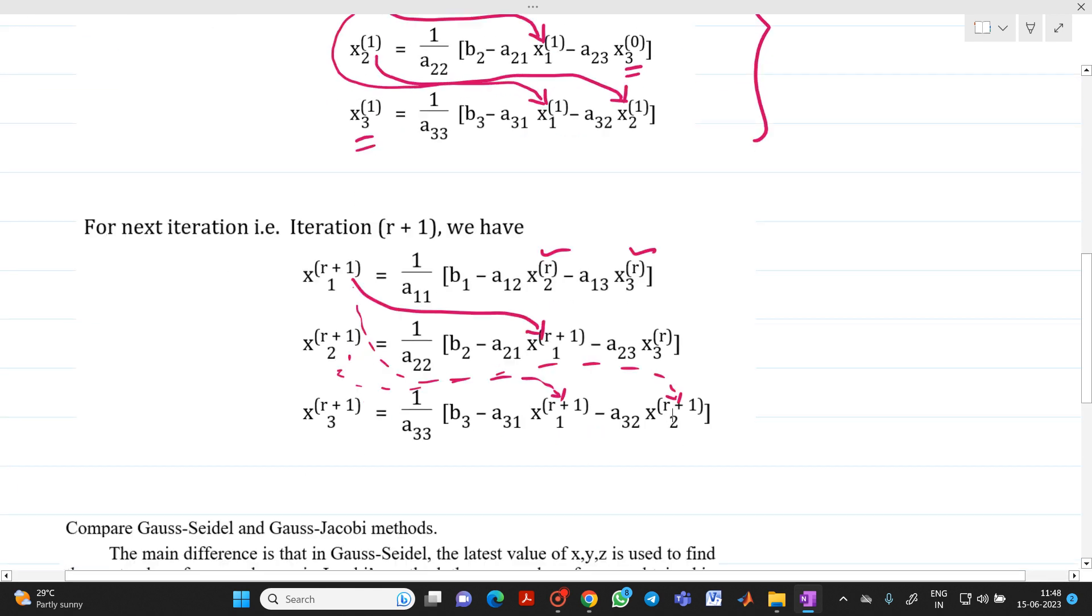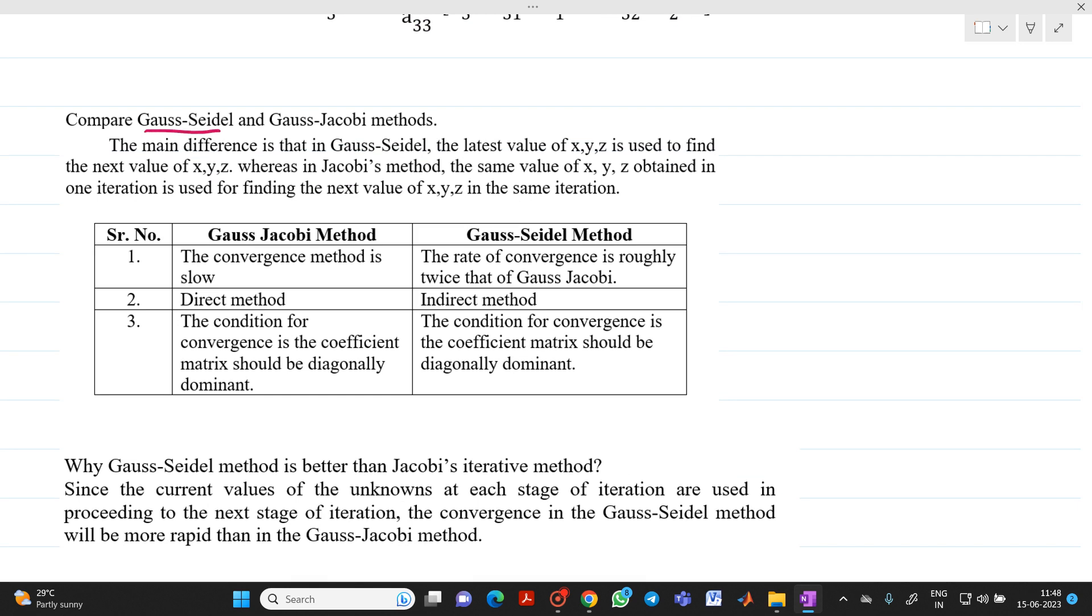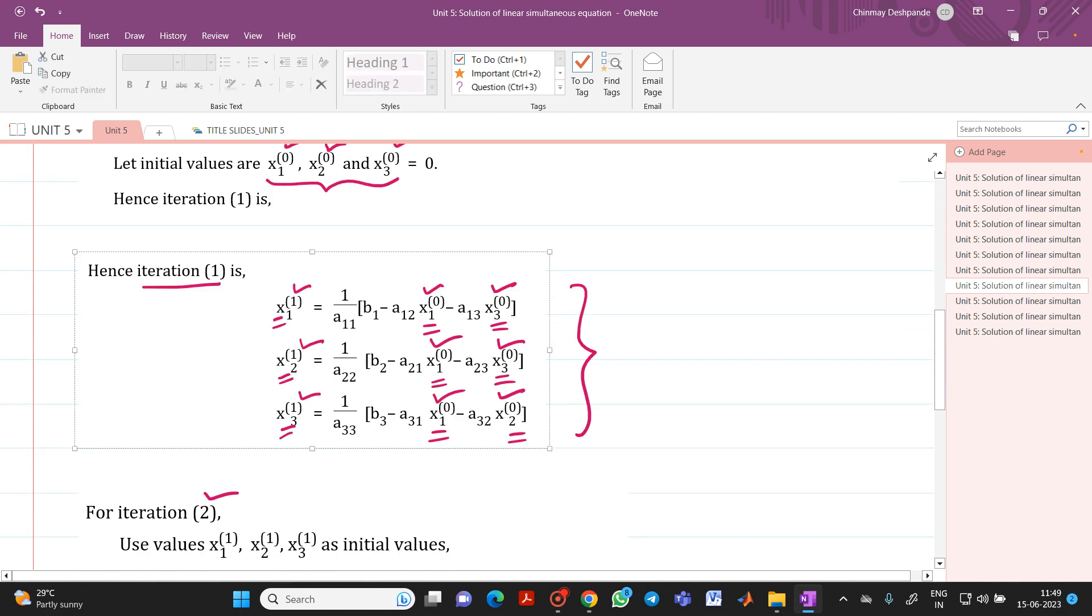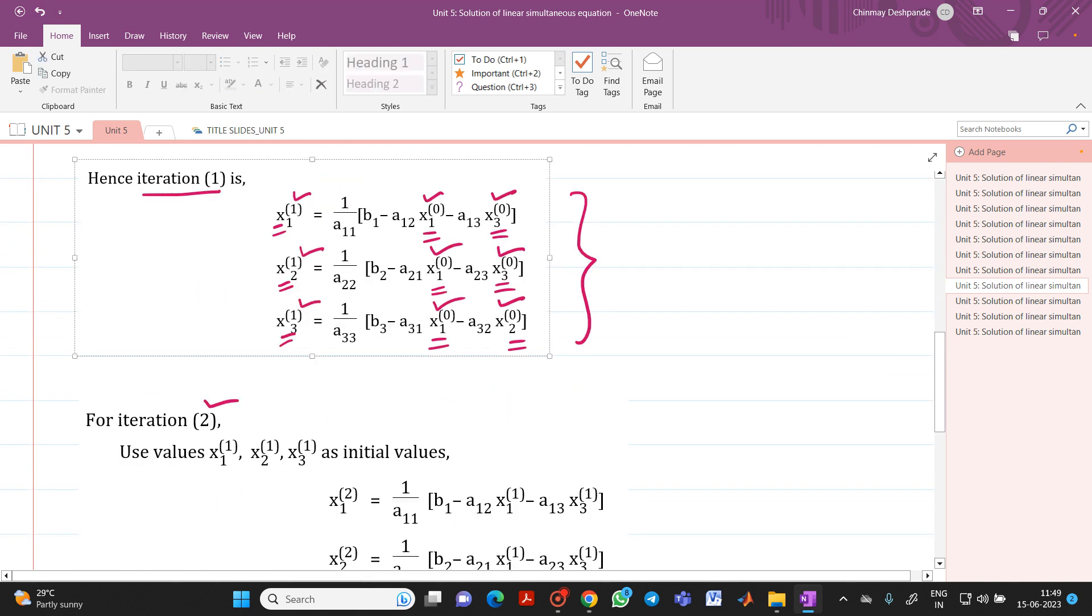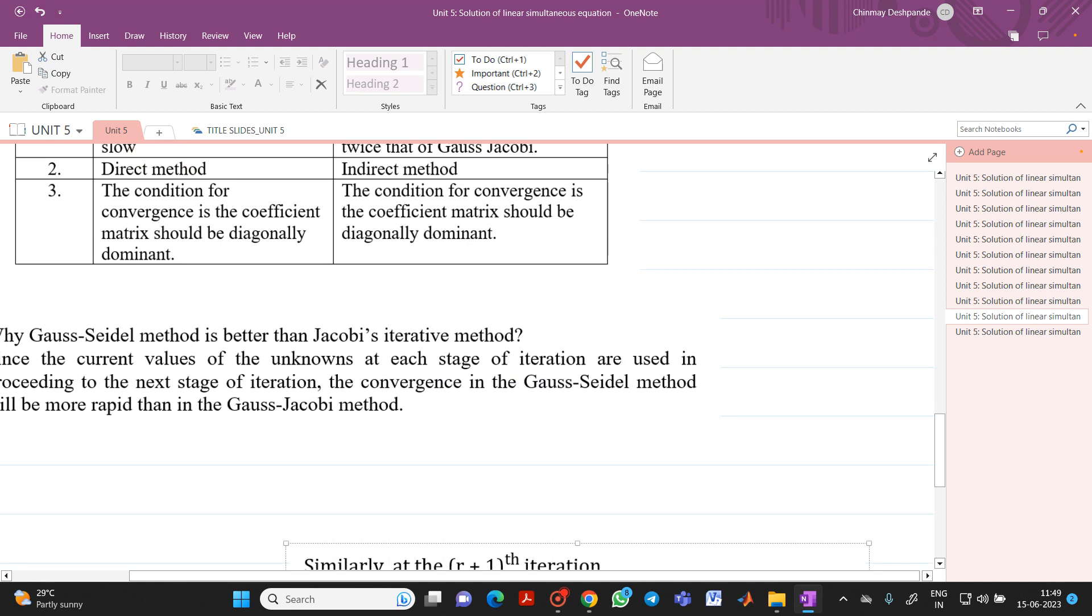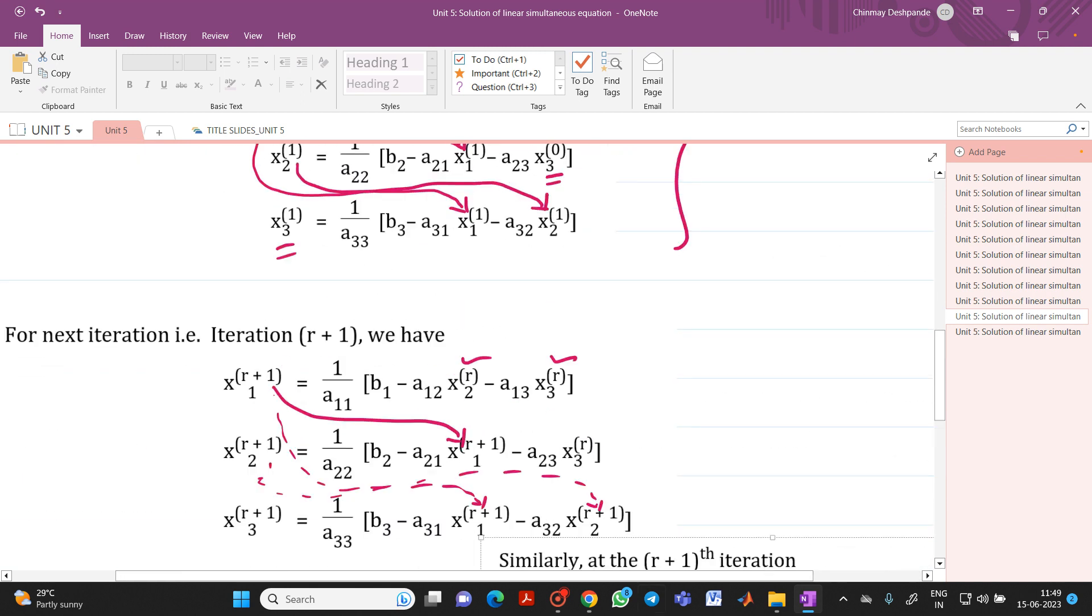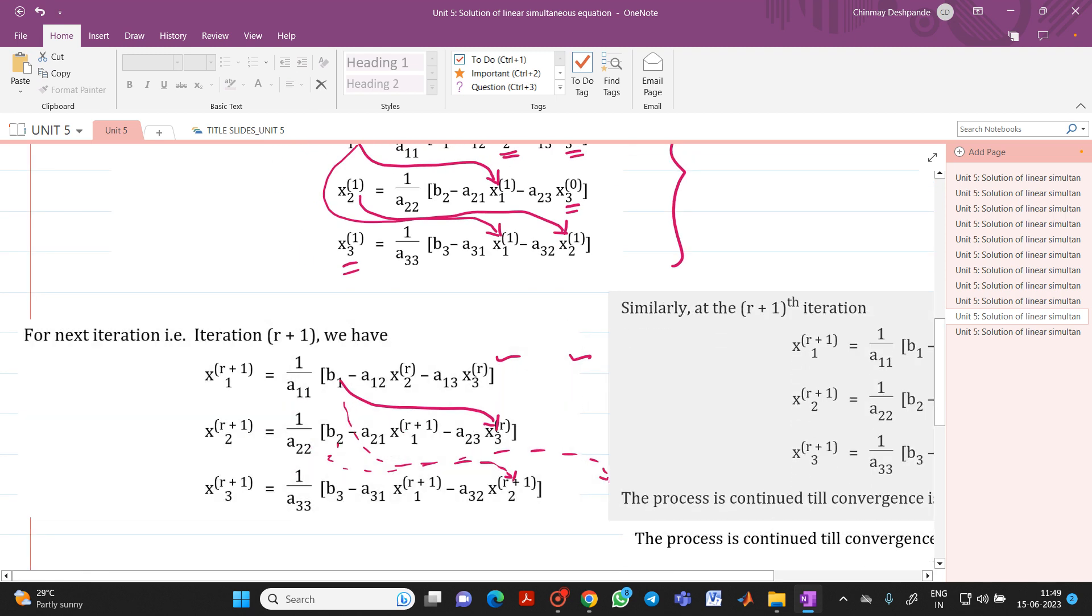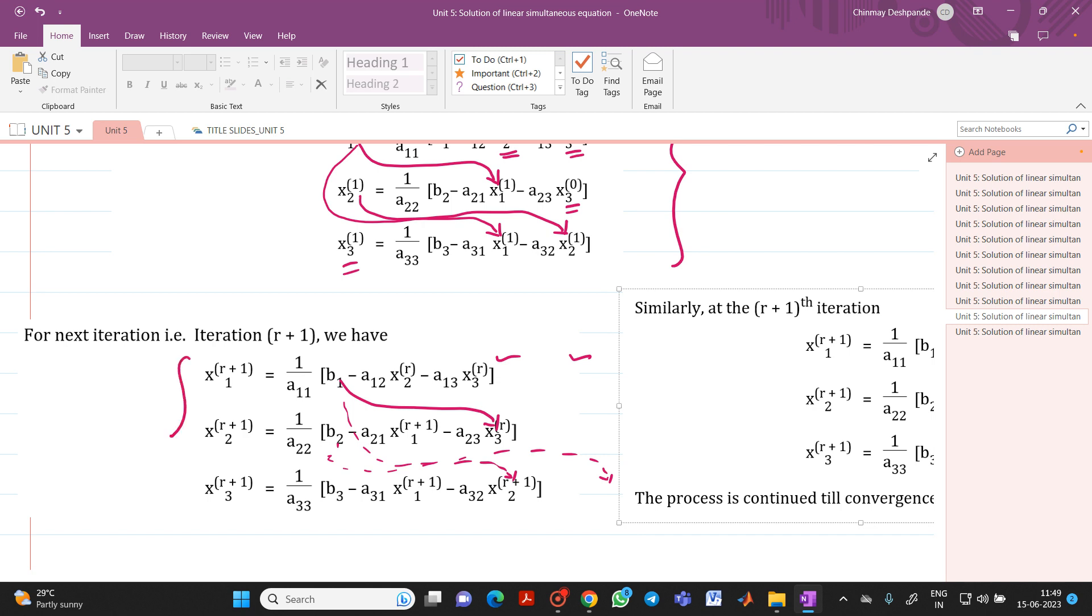So the question might be asked what is the comparison between Gauss-Seidel and Gauss-Jacobi method? So if you observe the main difference is that in case of Gauss-Jacobi method we are using only x1 of 0, x2 of 0 and x3 of 0. So let me open that topic also which is nothing but your Gauss-Jacobi method. If you remember this is the equation of Gauss-Jacobi method which is already we have seen in the previous video. So let me take it here for your information. So if I take it, let me take it here so that we can compare both the equations.